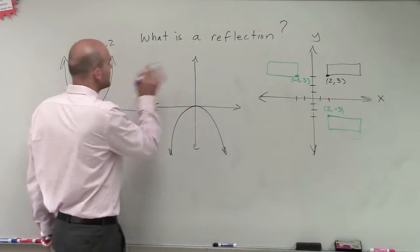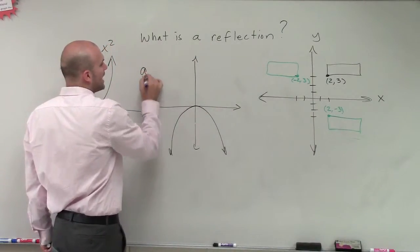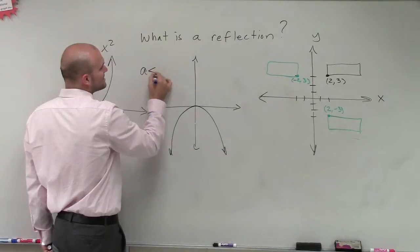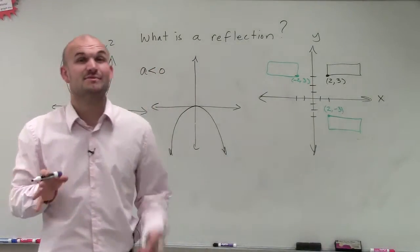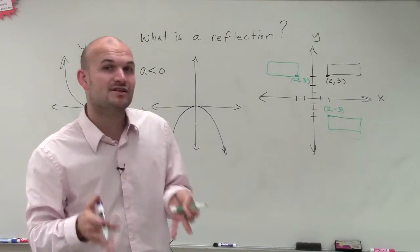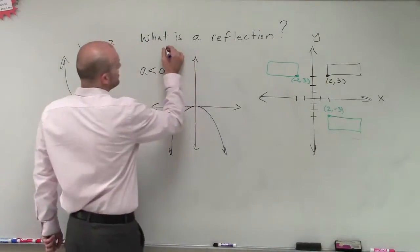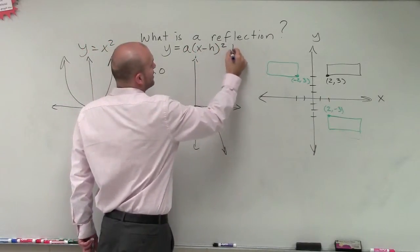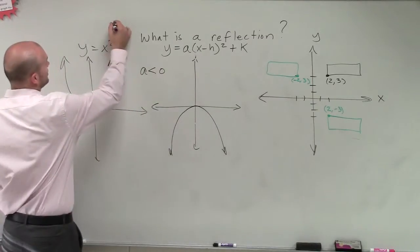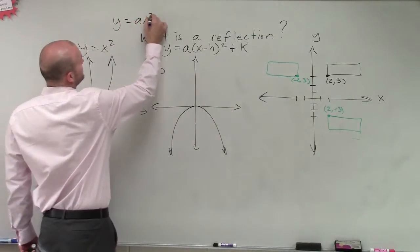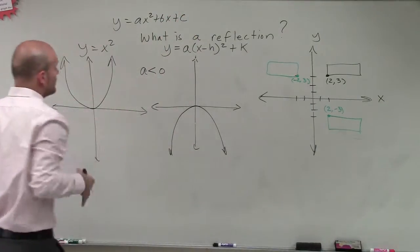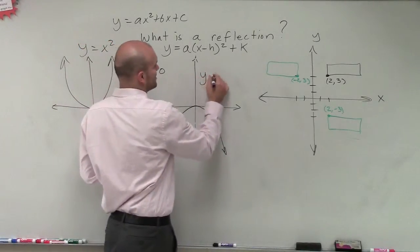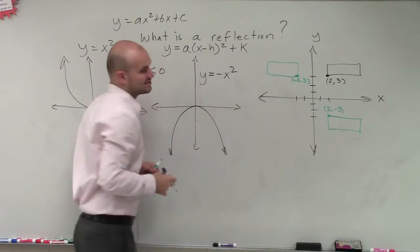So what we're going to be dealing with is a reflection when our a—so what is a reflection? When our a is less than 0, we have a reflection. It's going to become very important that we have this in a format where we can determine the value of a. When I'm talking about a, I'm talking about vertex form: y equals a times (x minus h) squared plus k. You could also be looking at y equals ax squared plus bx plus c. When our a is less than 0, we're going to have a reflection. So this graph will look something like this: y equals negative x squared.